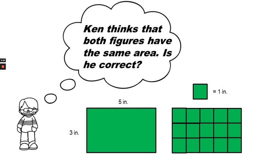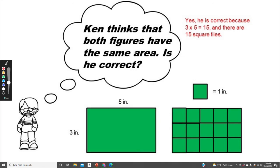Ken thinks that both of these figures have the same area. Is he correct? Yes, he is correct because in this figure, we know that this side is three inches and that side is five inches. And three times five equals 15.